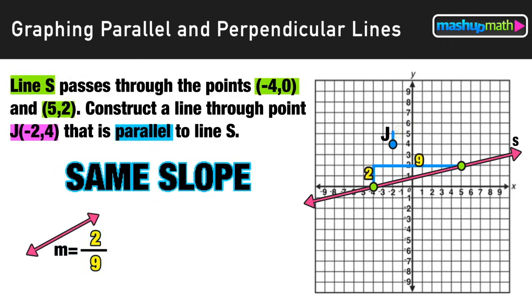So we're going to repeat that slope starting from point j by rising up two units and then running to the right nine units and then plotting a new point. And finally all we need to do is construct a new line through those two points that is parallel to line s with a slope of two over nine.